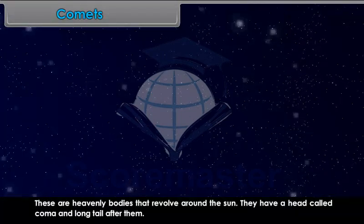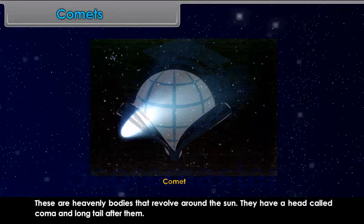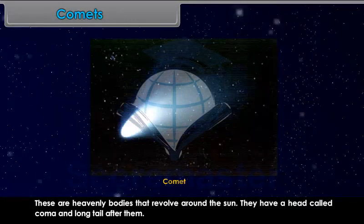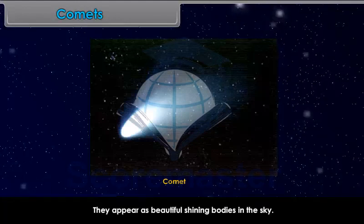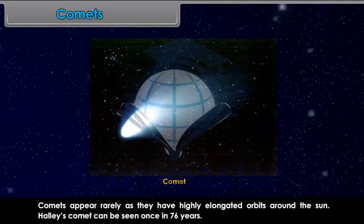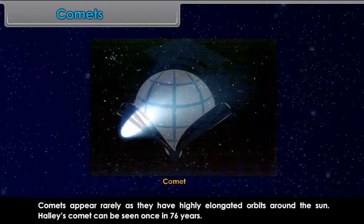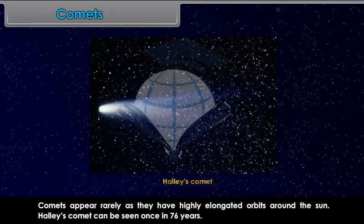Comets. These are heavenly bodies that revolve around the Sun. They have a head called Coma and a long tail after them. They appear as beautiful shining bodies in the sky. Comets appear rarely as they have highly elongated orbits around the Sun. Halley's comet can be seen once in 76 years.